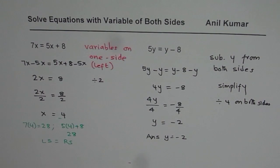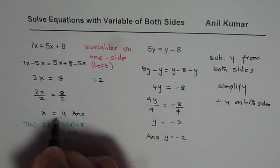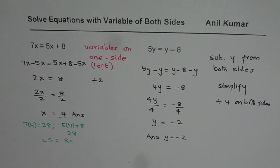So for this particular question y is minus 2. Previously our answer was x equals 4. So that is how you could actually solve equations with variables on both sides. We will take a few more examples with some variation. Thank you and all the best.